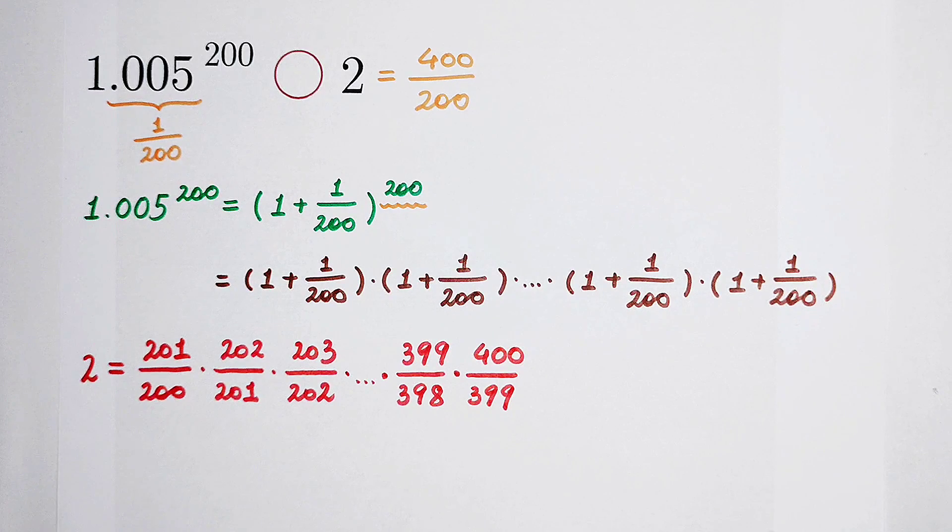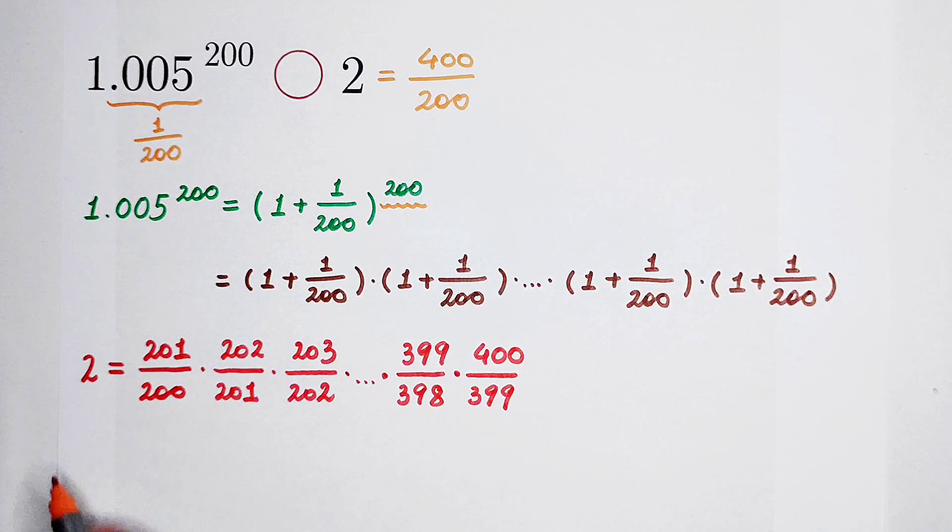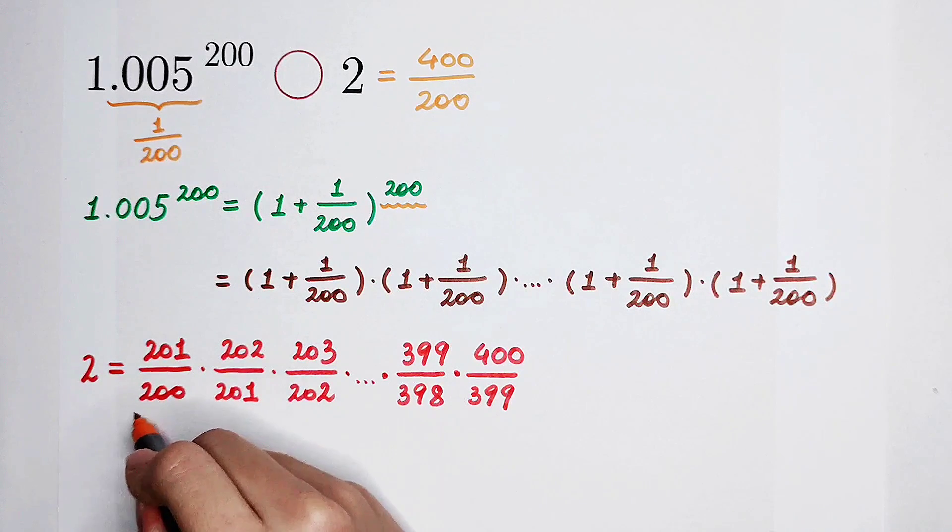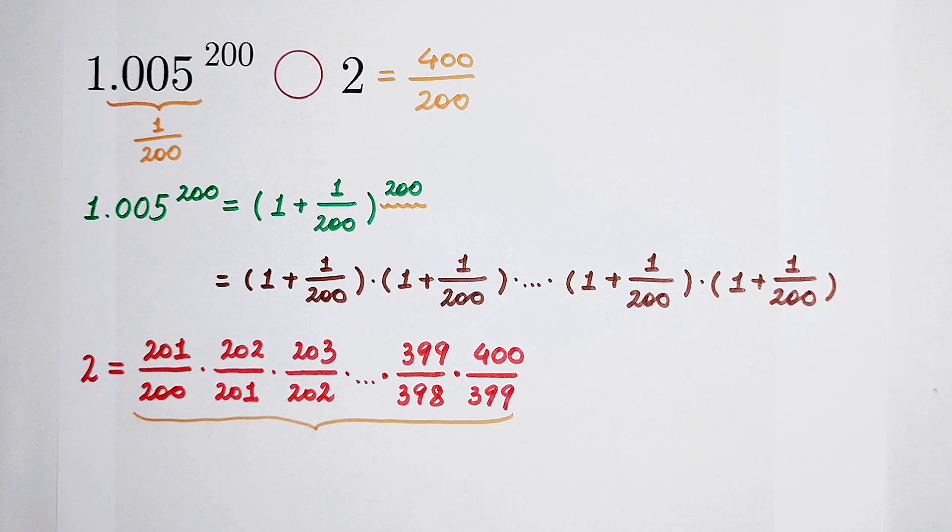A question. How many fractions, or how many numbers, are here? How many numbers are in this product? 199? No. It is 200. Why? But 399 minus 200 is 199. Why not 199, but 200?